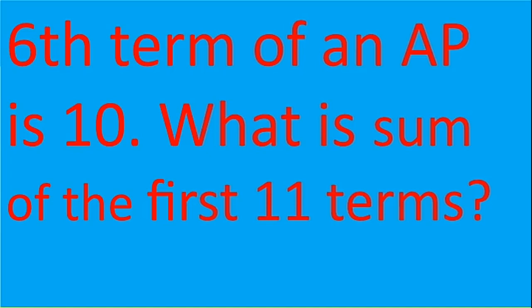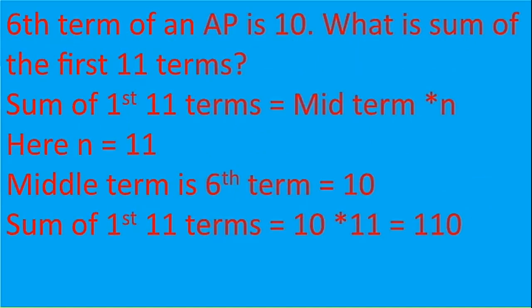We no need to do A + (N-1) × D. What we can do is for the sum of 11 terms: N × middle term. So 11 terms are there. The middle term is sixth term. Sixth term is 10. So sixth term is 10. So 11 × 10, 110 will be the answer.